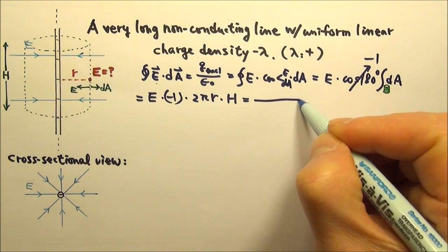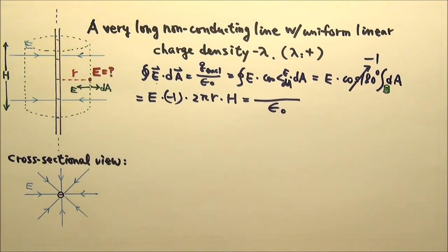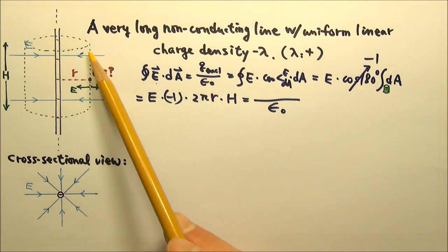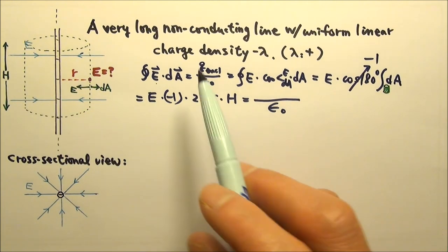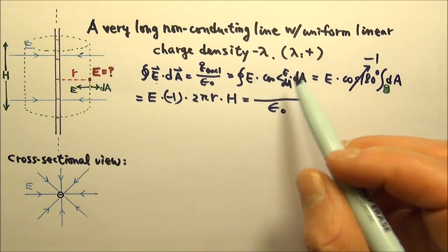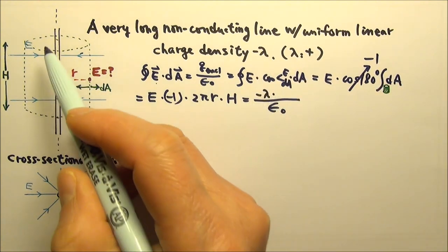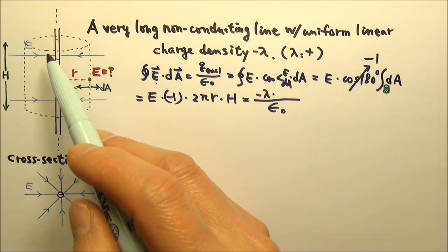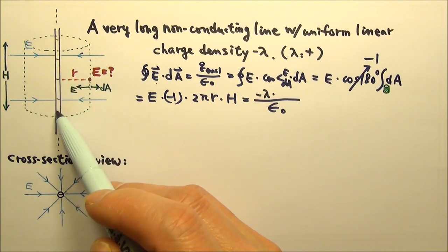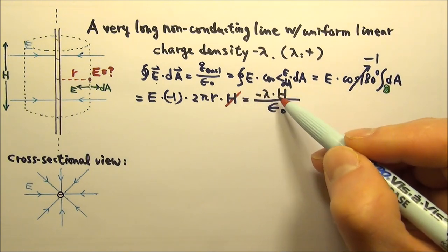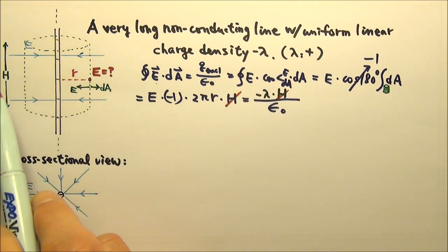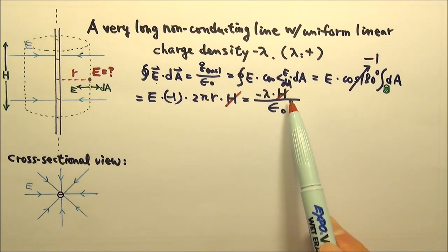Now this equals q enclosed over ε₀. How much charge is enclosed by this Gaussian surface? We multiply the linear density negative lambda by the length of the line inside the Gaussian surface, which is h. And we can cancel the h. Since h is arbitrary, we expect h to cancel because it should not affect the electric field we're looking for.